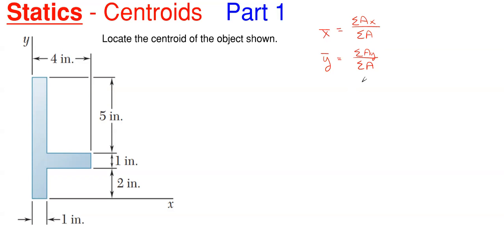Whenever you see capital A here, that is going to mean the summation of your area — your total area for your entire object. The summation of A times X and the summation of A times Y will be the summations of individual areas, once you break this object down into smaller parts, times the individual X centroid and the individual Y centroid.